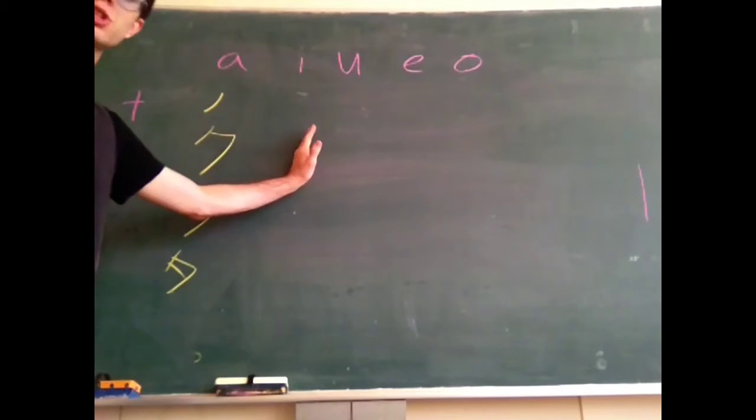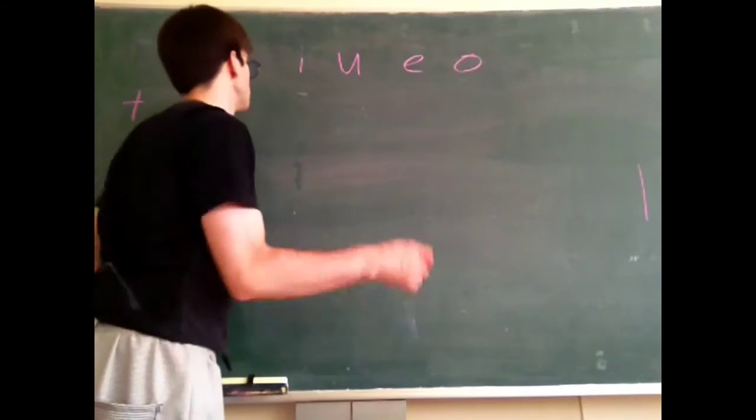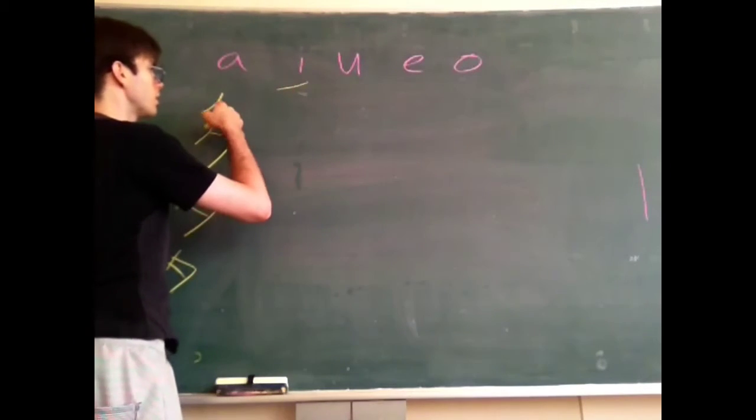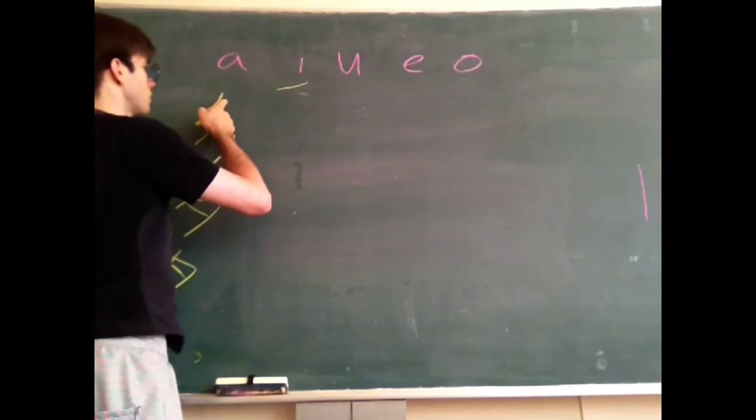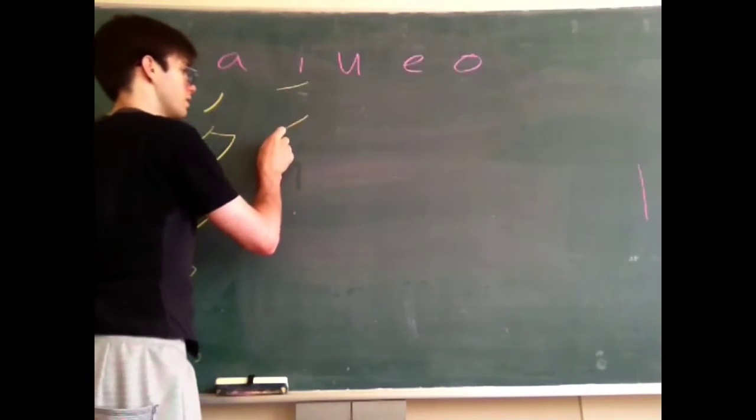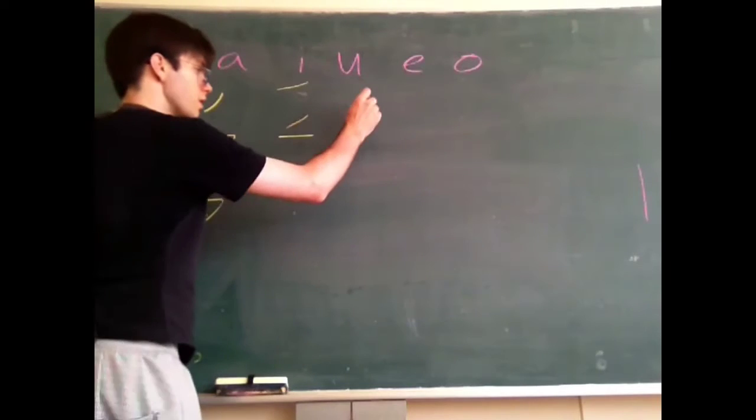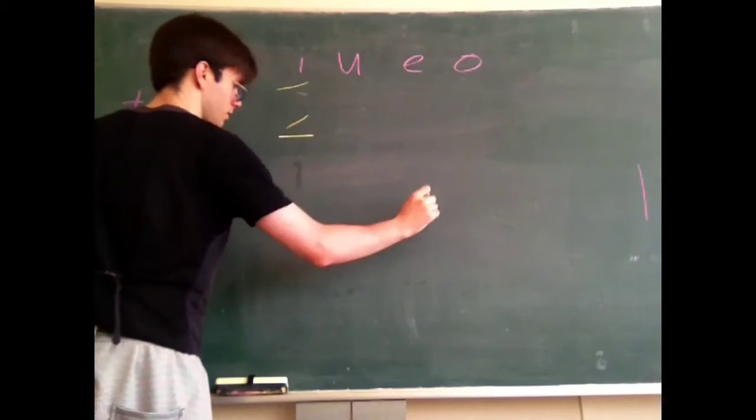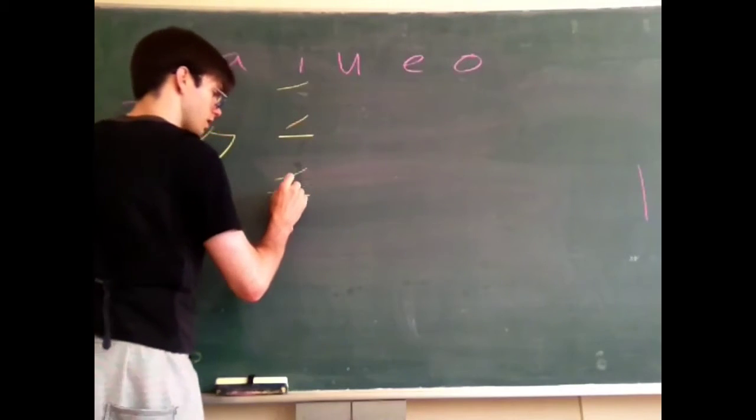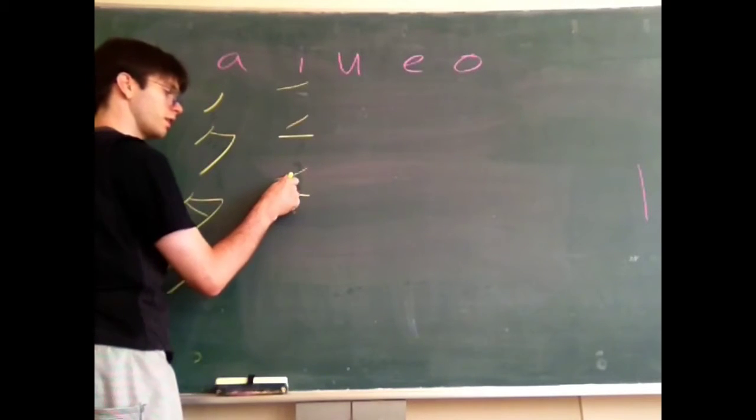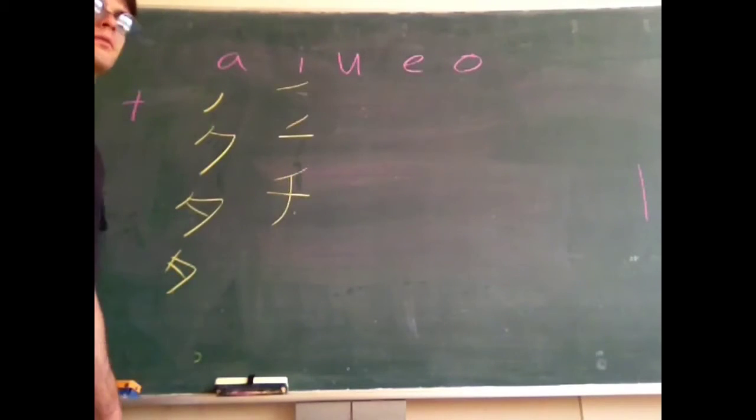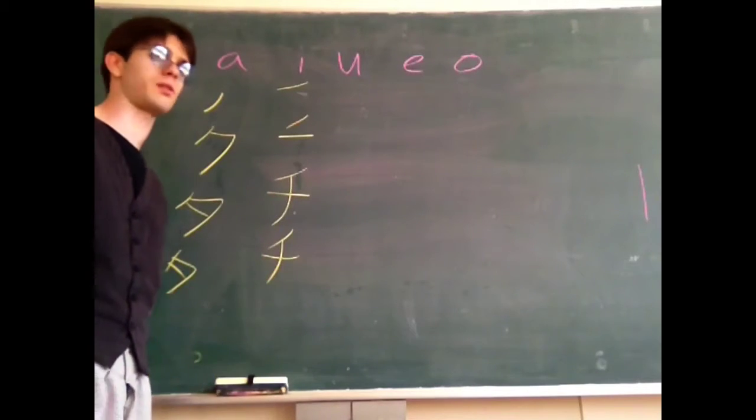Next up is chi. So we've got the first one is more like horizontal than it is vertical, right? The next one is just a straight up horizontal line. So this way first, then that way. And then the last one, you take this line here and just sort of have it come down. Chi. Looks kind of like someone tried to write four and did it really wrong.